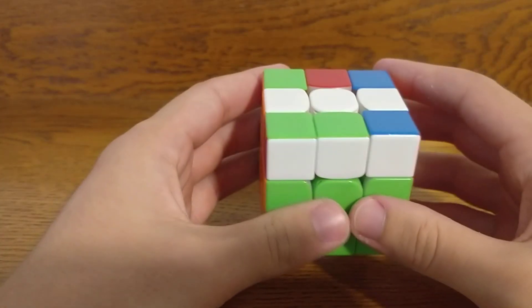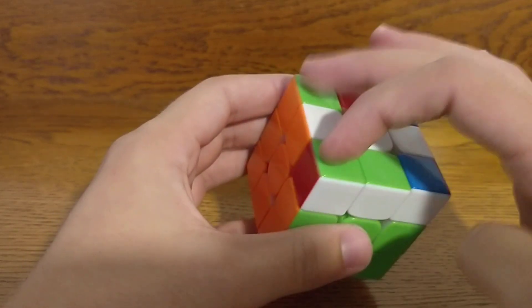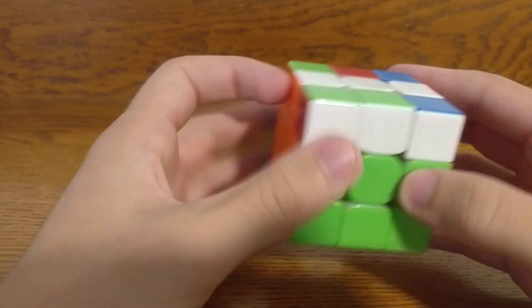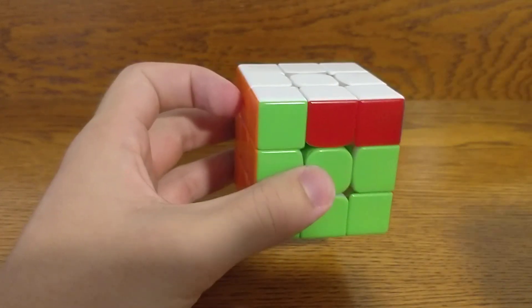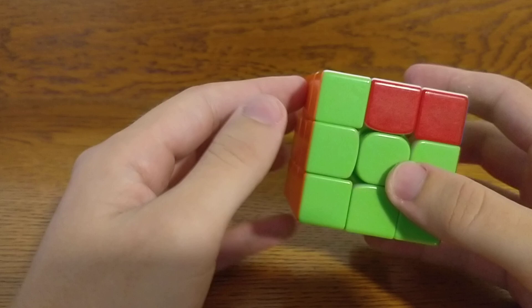The other important ROLL case to know is this one where you have these stickers matching and these two, because that will give you headlights on the left. I would show you the rest of the ROLL cases, but I'm sure you can figure them out yourself.